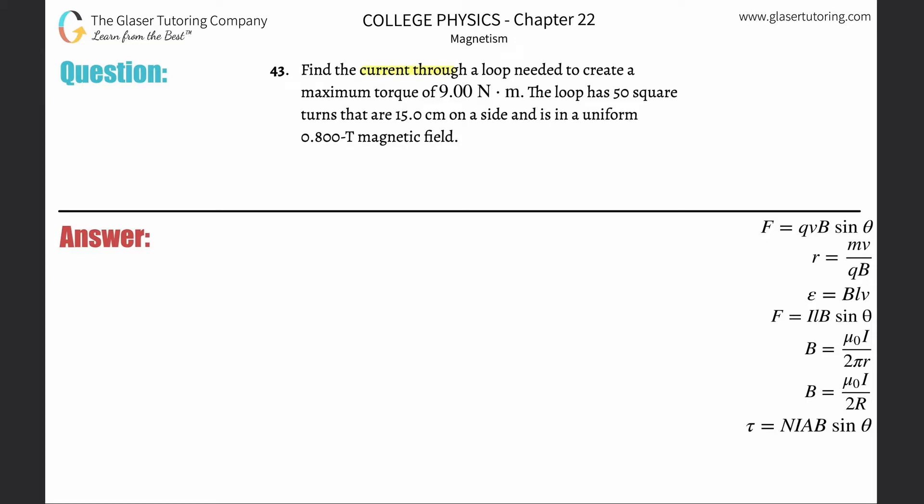Number 43: Find the current through a loop needed to create a maximum torque of 9 N·m. The loop has 50 square turns that are 15 centimeters on a side and is in a uniform 0.8 tesla magnetic field. To understand the concept, I went through a nice analysis in number 42.